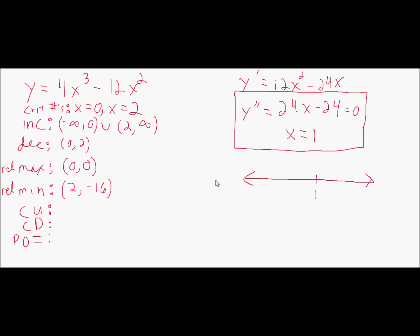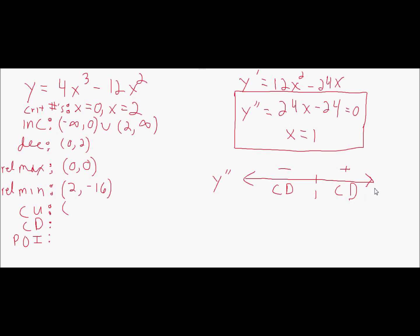When testing intervals, we plug into y double prime — not y prime, because we already found increasing and decreasing; not y, because that gives y values. We care about concavity. Testing zero, less than one: plugging zero into 24x minus 24 gives negative 24, which is negative, so the function is concave down. Be careful: a negative second derivative means concave down, whereas a negative first derivative means decreasing. Testing 100, greater than one: gives a large positive number, so the function is concave up.